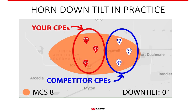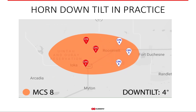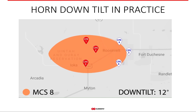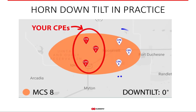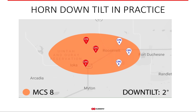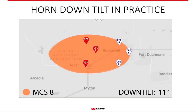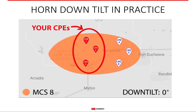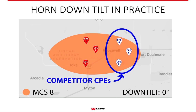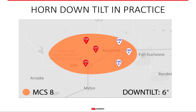By using down tilt you can dynamically improve noise conditions in your network. Here's an example: if your customers are clustered closer to the site and competitor CPEs are further away, you simply set the down tilt such that the MCS zone you want to provide covers only your own CPEs. This helps avoid interference from other CPEs as much as possible. This principle is valid in general — regardless of where competitive CPEs are located, simply set the down tilt according to the CPE that is furthest in that particular sector.